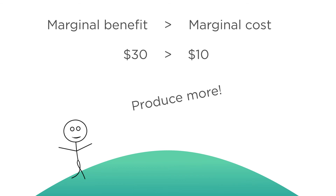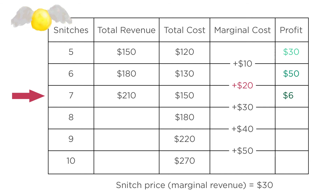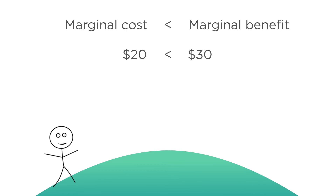Should the firm produce a seventh snitch? The marginal cost is $20 for that seventh snitch, but the firm gets a price of $30 for it. The price of $30 is greater than the cost of $20, which means that producing the snitch will add to the firm's profit, which is now at $60. Marginal cost is still less than marginal benefit, and the firm should produce more — keep climbing.